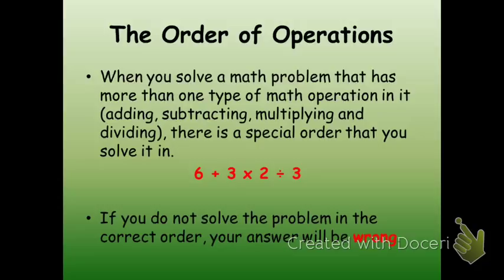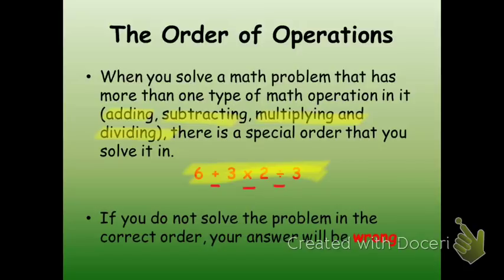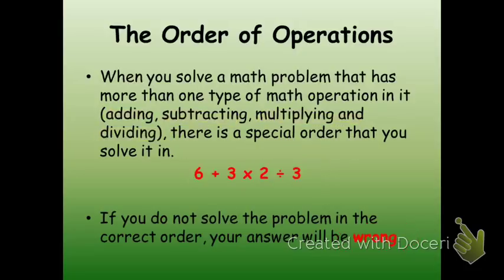When you solve math problems that have more than one type of math operation in it — meaning adding, subtracting, multiplying, and or dividing — there's a special order that you have to solve the problem in. Take for instance this example right here. It's got adding, multiplying, and dividing on the same problem. What most people might be tempted to do is work left to right and just solve everything in order. But that will give you the wrong answer because there's a correct order in which we solve these types of problems.